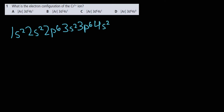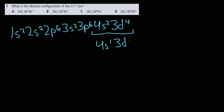Now we have 10 electrons here and 10 here, then four more in the 3d. It turns out that this chromium atom will actually be more stable if these two energy levels are half-filled rather than having a full 4s and a partially filled 3d — because four out of ten is a kind of unstable arrangement. What the atom prefers is a half-filled d sub-level and a half-filled s sub-level.